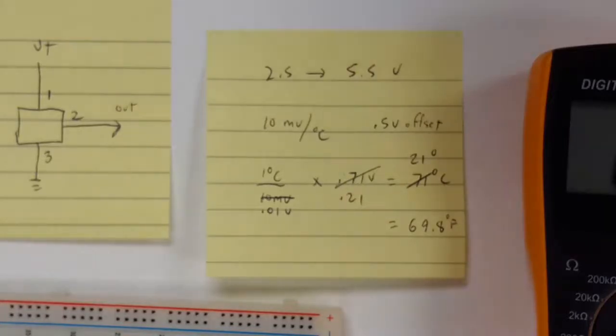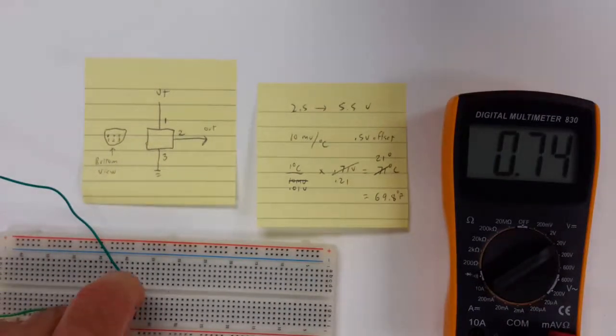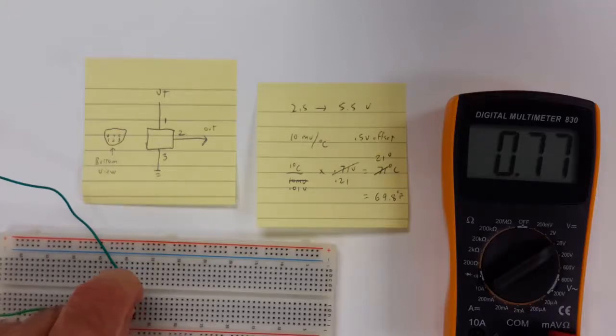So the device works, and let's watch what happens if I touch it. It's fairly sensitive. If I touch the device, I'm going from 0.71 to 0.73. The temperature is increasing, and I should be approaching body temperature.